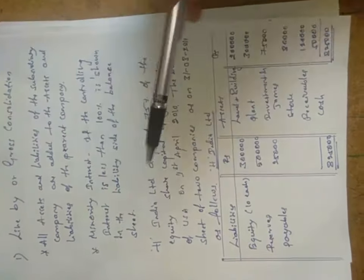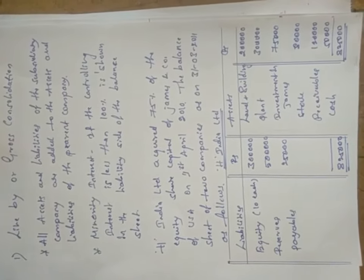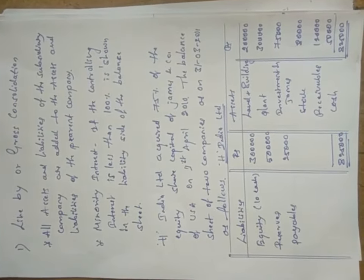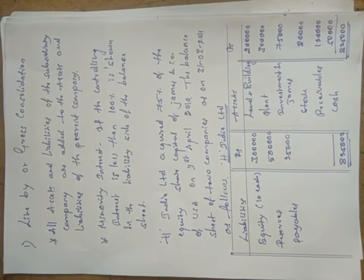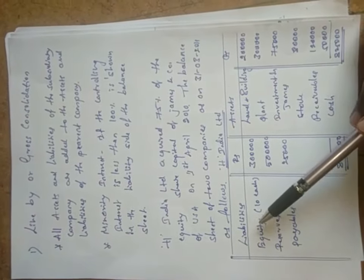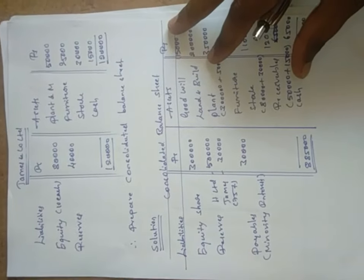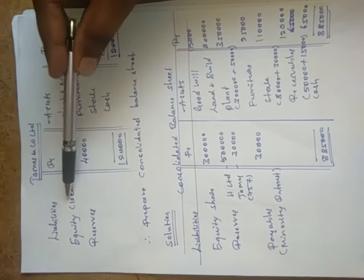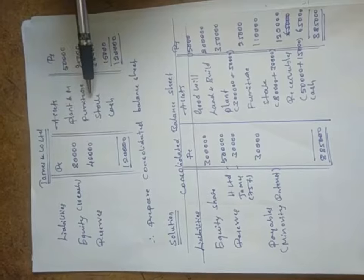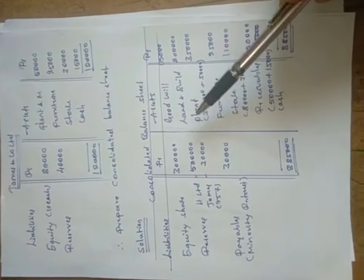The problem: H India Limited acquired 75 percent of the equity share capital of James and Company of USA on 1st April 2010. The balance sheet of the two companies as on 31st March 2011 is as follows. H India Limited has liabilities — equity, reserves, and payables — and assets including land and building, plant and machinery, investment in James Company, stock, receivables, and cash, totaling 8,25,000 on both sides. James Company has liabilities — equity and reserves — and assets — plant and machinery, furniture, stock, and cash — totaling 1,20,000 on both sides. The requirement is to prepare the consolidated balance sheet.